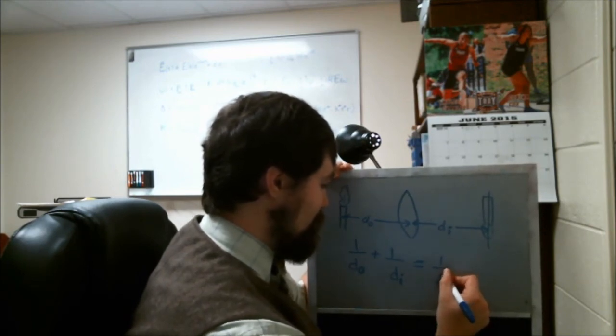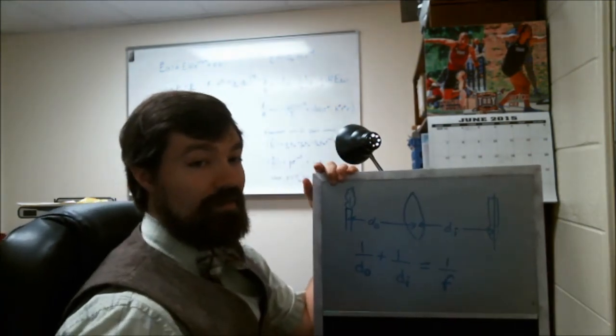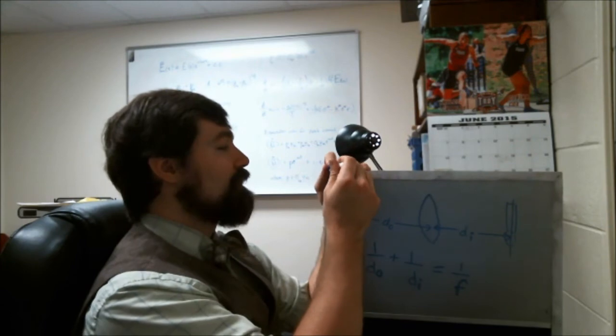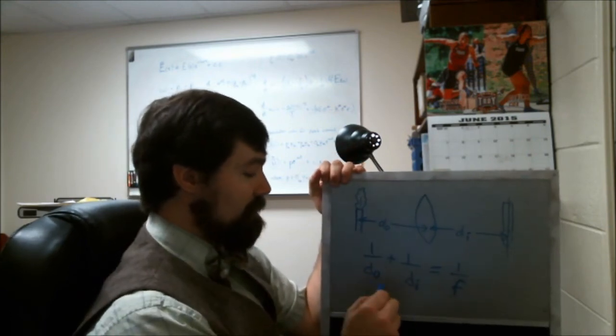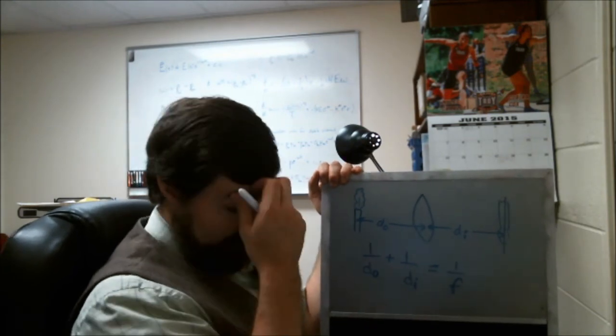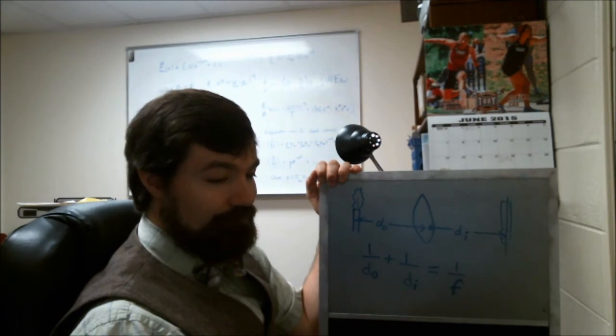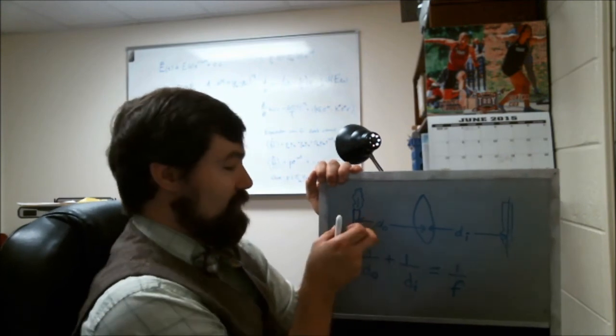1 over DO plus 1 over DI is going to equal 1 over F. Where F is the focal length of your lens. And the units on F are going to be equal to whatever units you decide to measure this object and this image distance in.